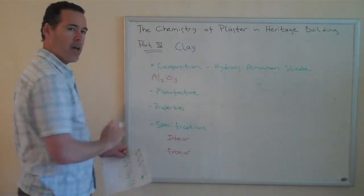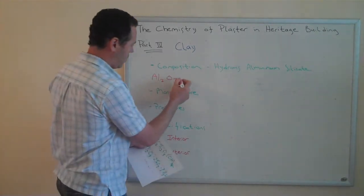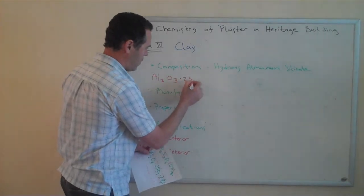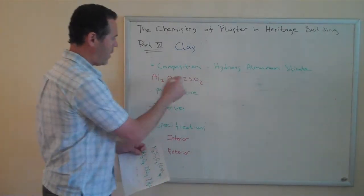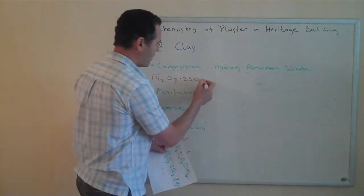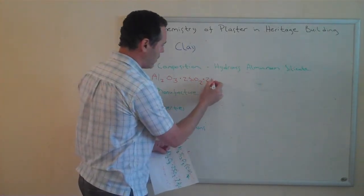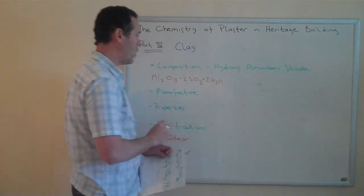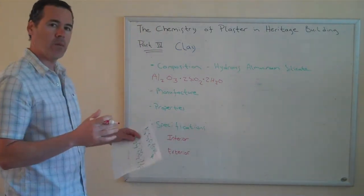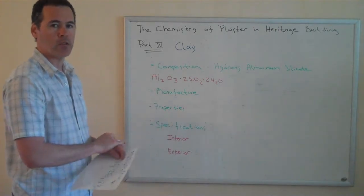Here we have the alumina component, Al2O3, and then we have two of the silicon dioxide component, 2SiO2, and that's chemically bound to water, 2H2O. But in reality, this is not simply a mixture of those materials.